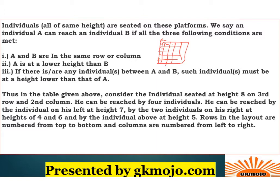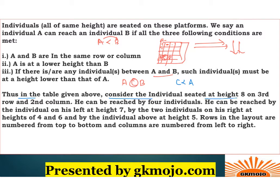The three conditions are: first, A and B are in the same row or same column. Second, A is at a lower height than B — the height of A should be lower than B if A wants to go to B's position. Third, if there is any individual C between A and B, that individual must be at a height lower than A. So basically if A, C, and B are in a line, C must be at a height less than A.